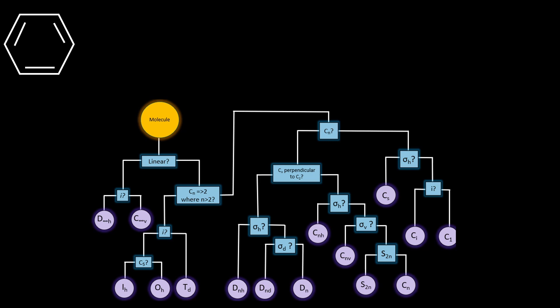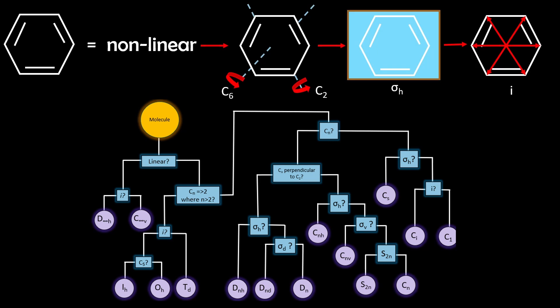And for the last example, we have benzene. It has multiple C2 and C6 axes. It has a horizontal mirror plane and an inversion center. So it's not linear, and doesn't have more than two Cn axes greater than C2. It has a C6 axis with multiple C2 axes perpendicular to it, plus a horizontal mirror plane and an inversion center. That places it in D6H.